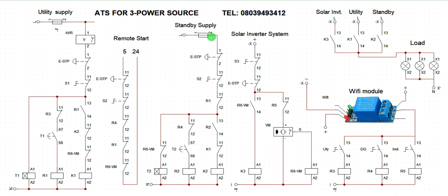We also have override features on individual logic — there are override switches on each section. However, those physical overrides require you to go to where the ATS is situated. With the Wi-Fi, you can override any function from your mobile phone anywhere in the world, provided you have an internet-enabled device.